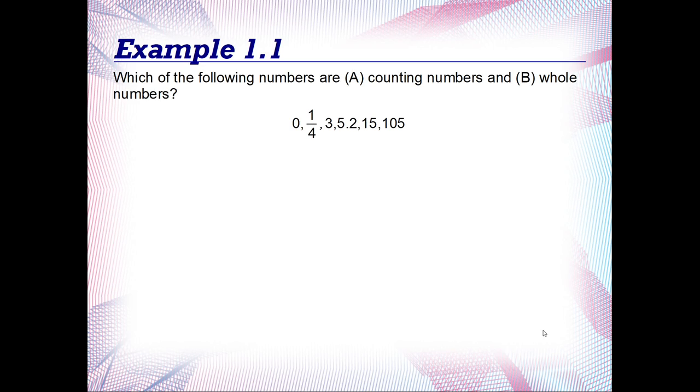The first example says: which of the following numbers are (A) counting numbers and (B) whole numbers? Let's look at these individually. Let's find the counting numbers first. Zero is not a counting number. We never mentioned anything about fractions, so we know that one-fourth is not a counting number. Three is the third counting number—one, two, three—so that's going to be in our list. We never mentioned anything about decimals, and decimals are not counting numbers, so 5.2 or five and two-tenths will not be in either of these lists. If we continue counting after five, we'll eventually get to fifteen: six, seven, eight, nine, ten, eleven, twelve, thirteen, fourteen, fifteen. So fifteen is a counting number. And if we keep counting longer, eventually we'll get to 105. So the counting numbers in this list were 3, 15, and 105.